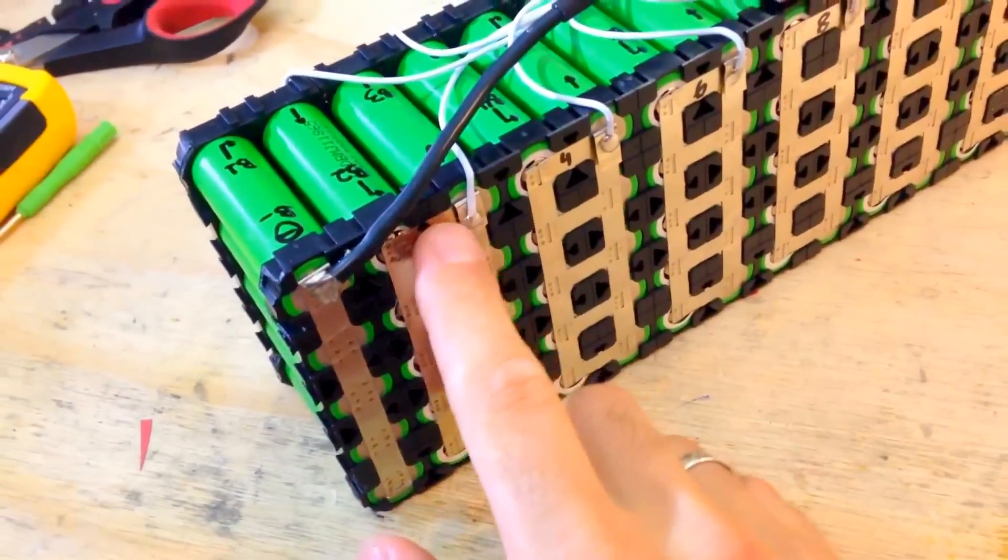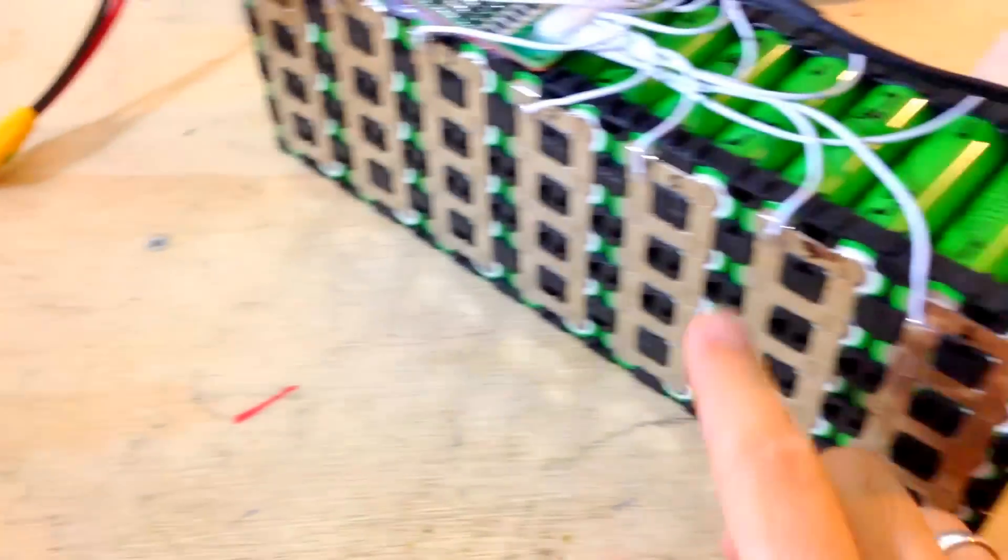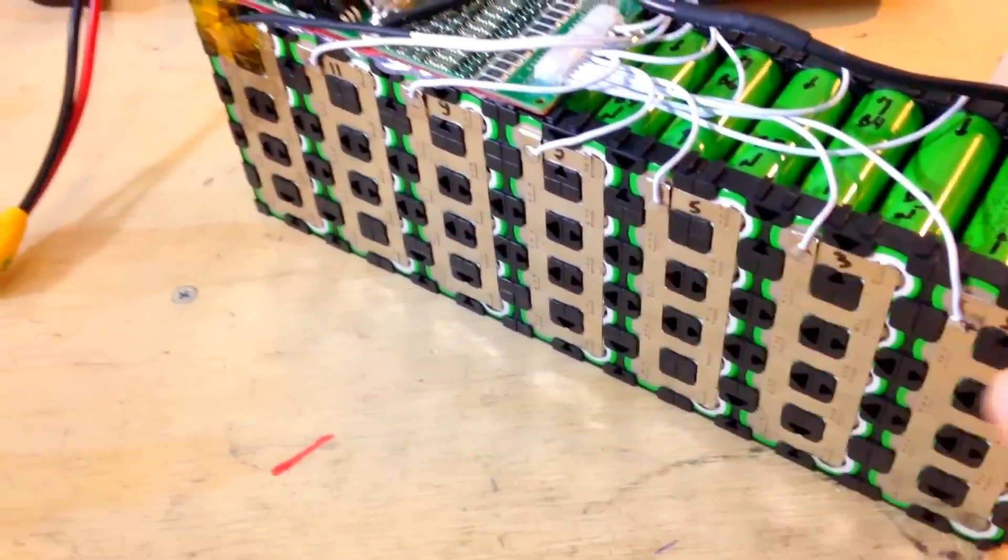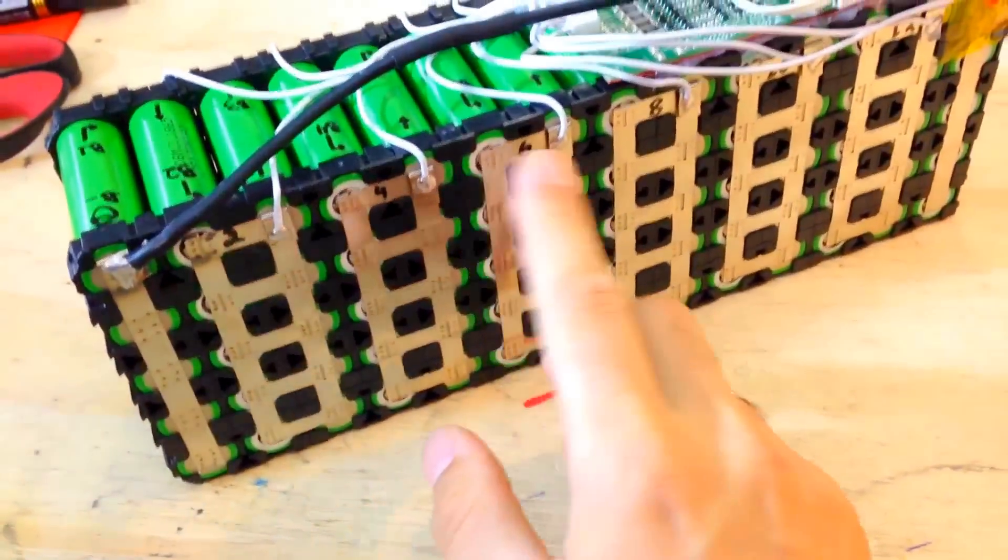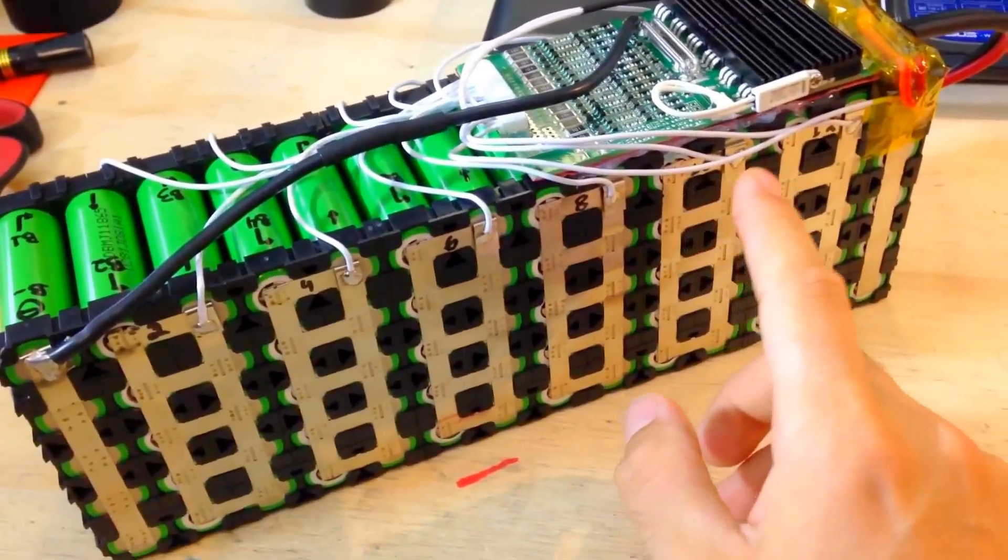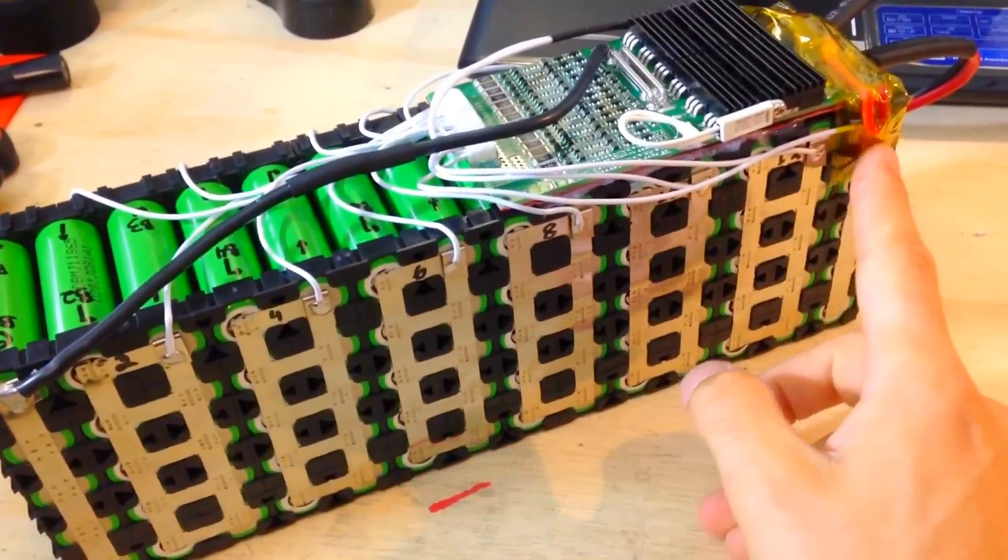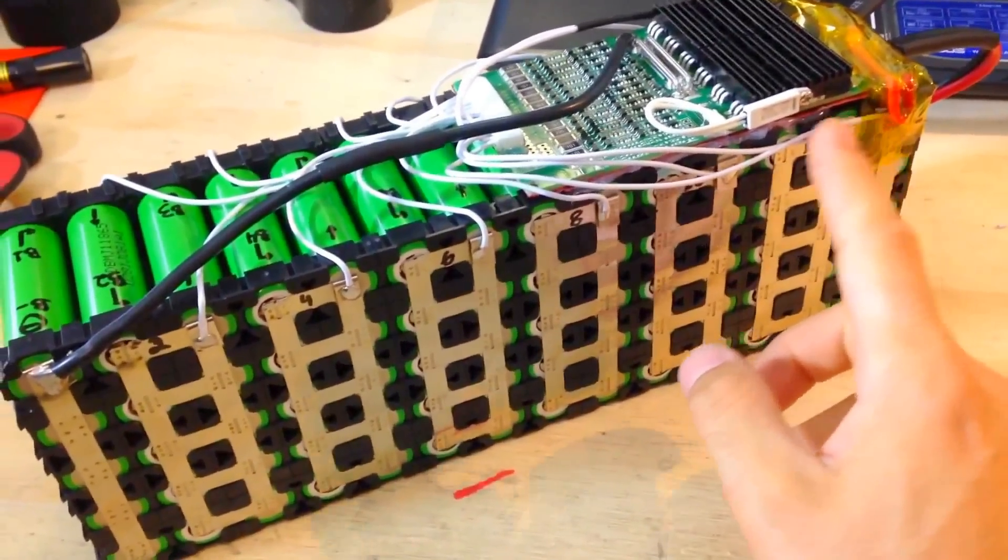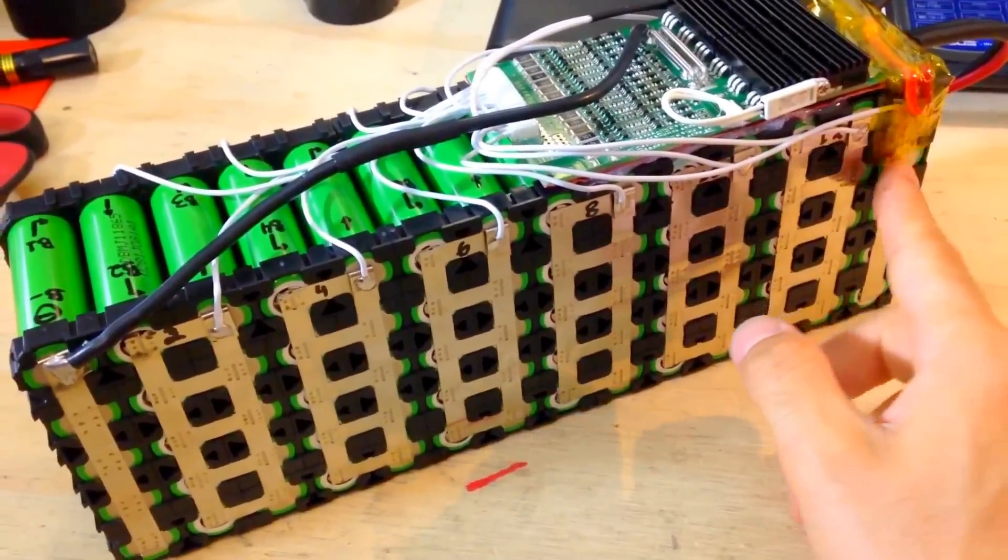B1, and then goes B2 which is here, and then goes back there B3, and then it goes here B4, and then goes B5, B6, 7, 8, 10, 12, 14. The 14 is actually the positive, the last one.